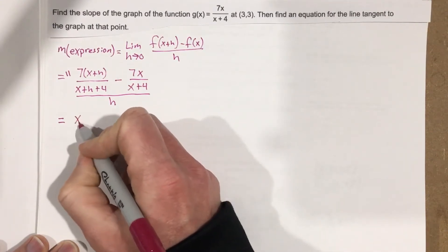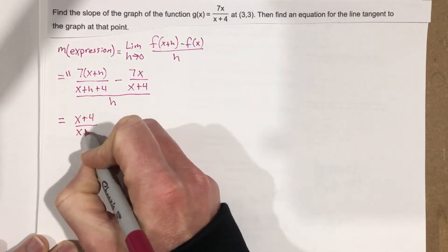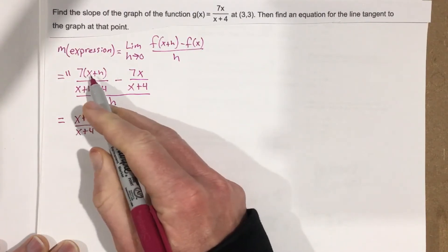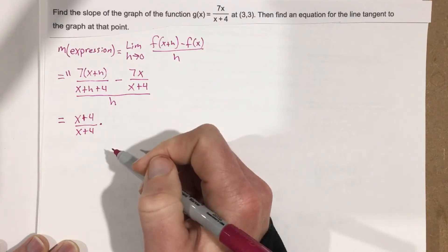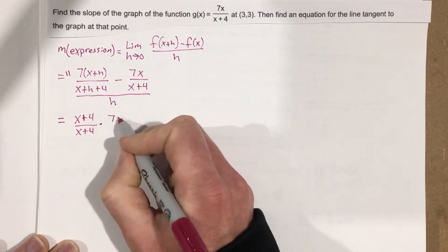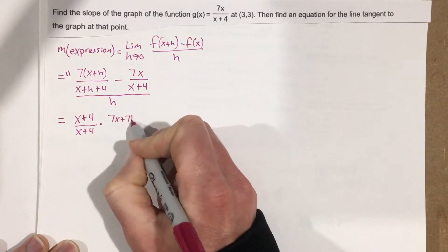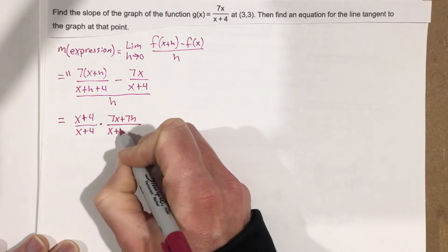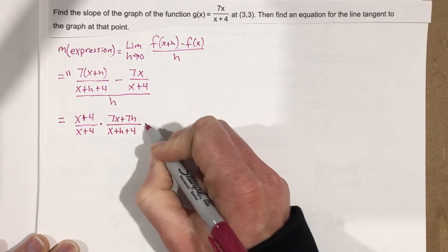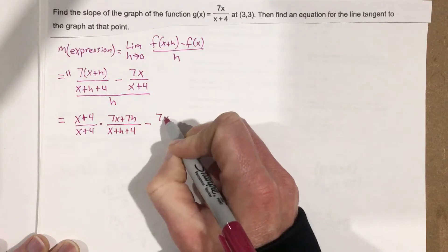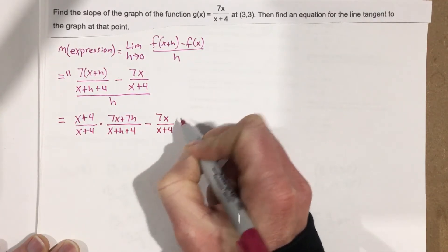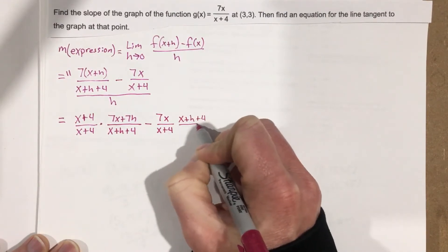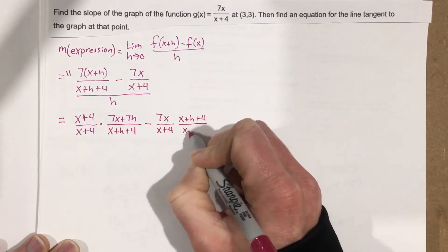So we multiply by x plus 4 over x plus 4, and distribute on top to get 7x plus 7h, all over x plus h plus 4 in the denominator. Then we subtract 7x over x plus 4, multiplied by x plus h plus 4 over x plus h plus 4.